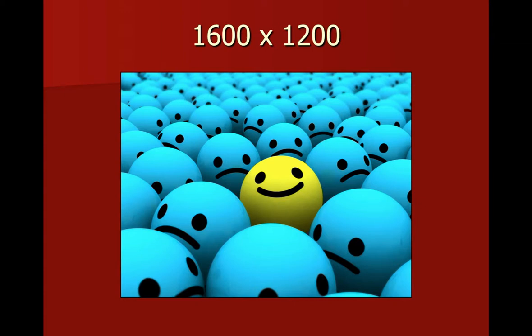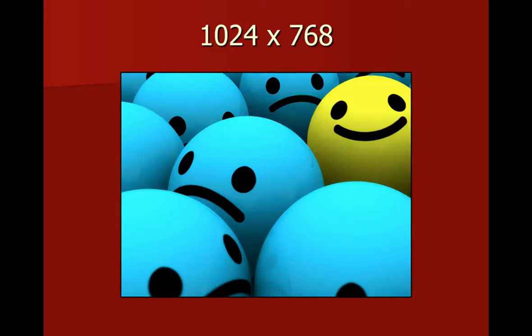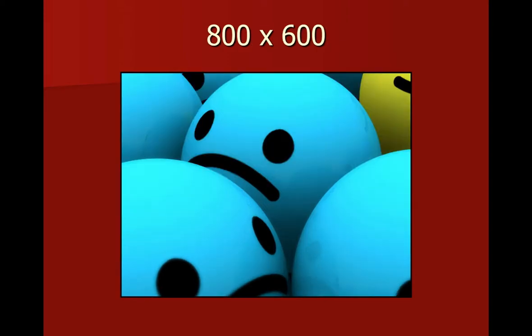On a 1600 by 1200 pixel screen resolution you can see the entire image. Now if I change my screen resolution to something like 1280 by 960, you can see some of the top and right side get cropped out because the entire image can't fit within the display area. If I reduce the display area further to 1024 by 768 or even 800 by 600, that yellow smiley face is all but missing — it just doesn't fit in the display area.